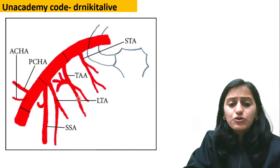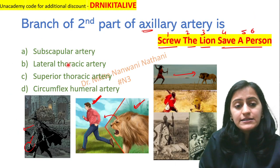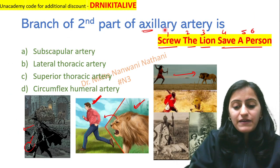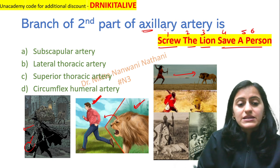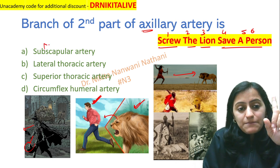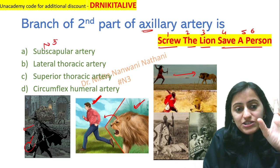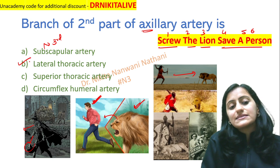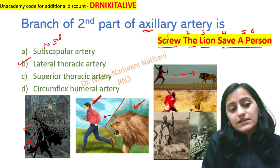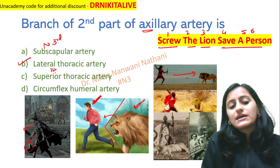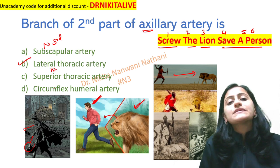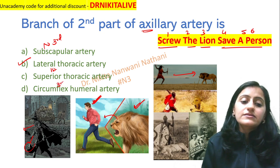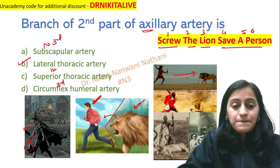Going back to our original question: which is the branch of the second part of the axillary artery? Subscapular is the third part; lateral thoracic is the second part — so the answer is lateral thoracic. Superior thoracic is the first part, and circumflex humeral is again the third part.